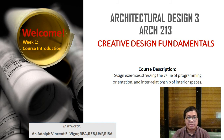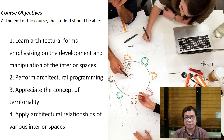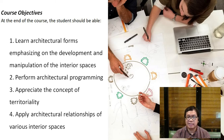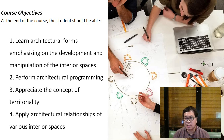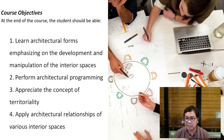Let's move to the course objectives. First: learn architectural form emphasizing the development and manipulation of interior spaces. In Architectural Design 3, you should apply the theories you've learned in your first year — concepts like repetition, contrast, and emphasis — which are really useful in design.